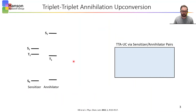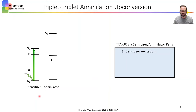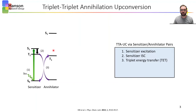One popular means to accomplish photon upconversion is through triplet-triplet annihilation, or TTA-UC. Typically, this involves molecular sensitizer and annihilator pairs, and begins with the photoexcitation of the sensitizer to the singlet excited state with lower energy light — in this case, a green photon. In most molecular systems, the photoexcited sensitizer will undergo intersystem crossing to the triplet state, where it can triplet energy transfer to an acceptor or annihilator molecule, resulting in an annihilator triplet excited state, while the sensitizer returns to the ground state.